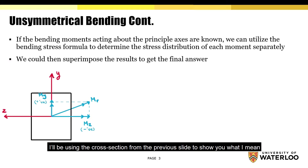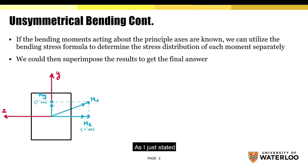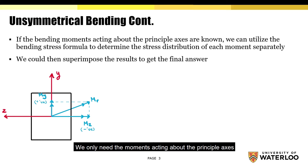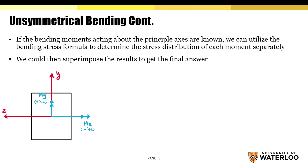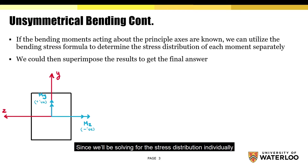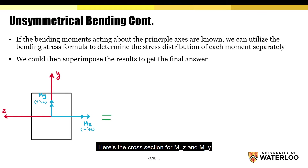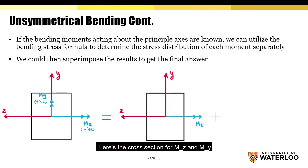I'll be using the cross section from the previous slide to show you what I mean. As I just stated, we only need the moments acting about the principal axes, and so we'll only need the z and y components of MR. Since we'll be solving for the stress distribution individually, I'll draw a cross section for each component. Here's the cross section for Mz and My.